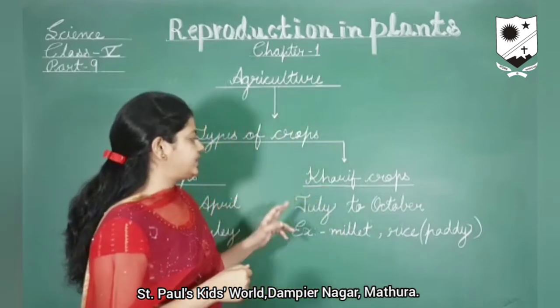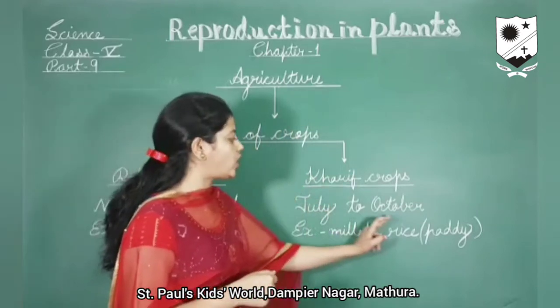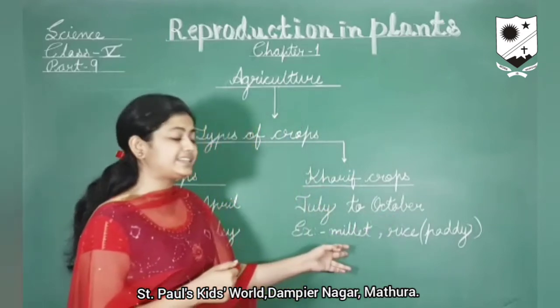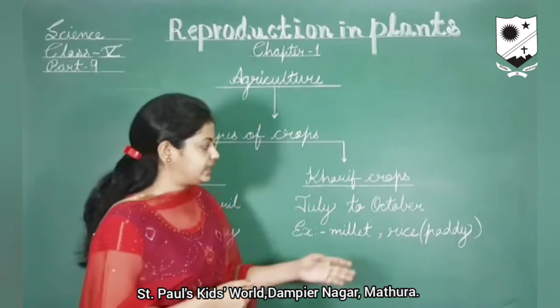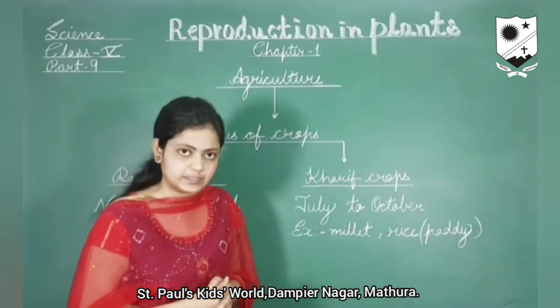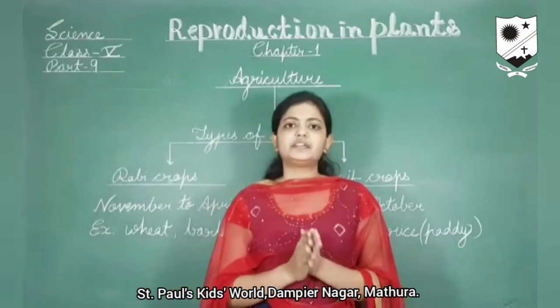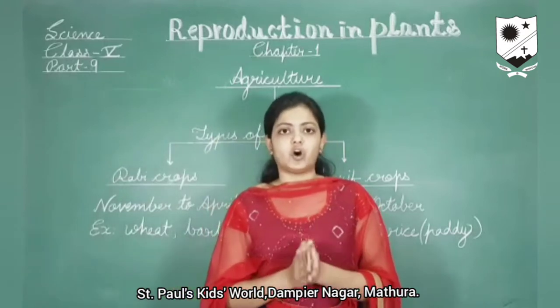Kharif crops are grown from July to October. For example, millet, rice, and paddy. They are grown in the rainy season. So these are the two different types of crops.